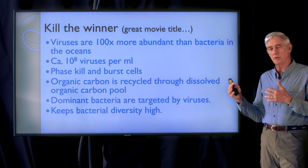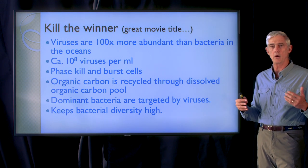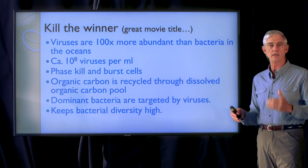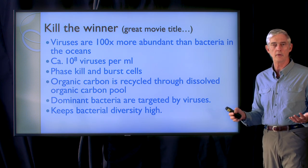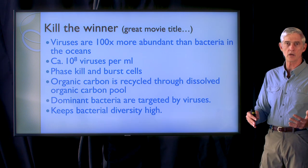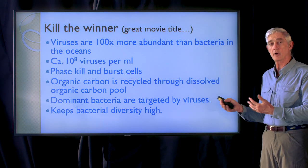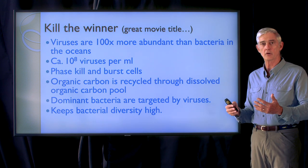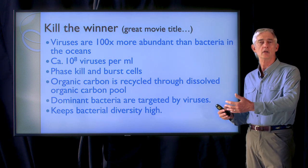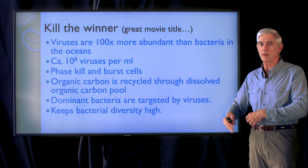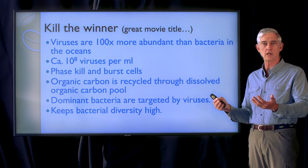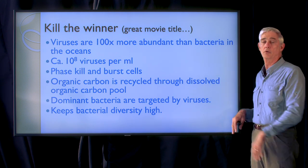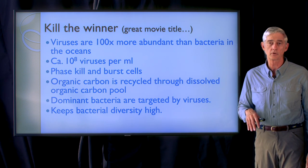So 'kill the winner' is a hypothesis for how competitively dominant microbes that might otherwise be there are held in check. It's a dynamic process where one or another of these microbes might be released from competition or able to take over some part of the ocean — like we saw off the coast of England or on the northern coast of Turkey — only to be held in check by viruses that evolve the ability to attack them.